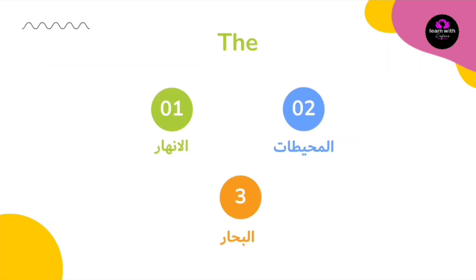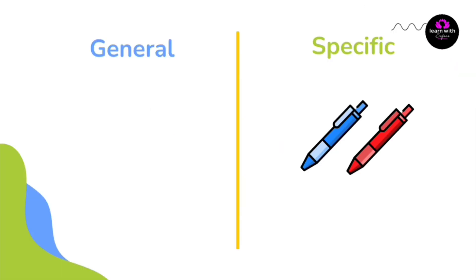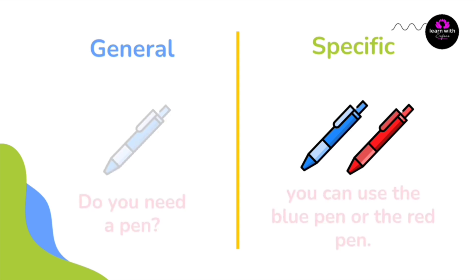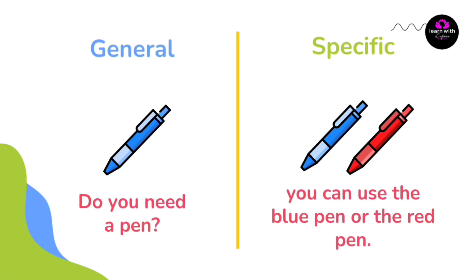برضو معلومة مهمة عن the: تيجي دائما مع اسماء الانهار والمحيطات والبحار. واذا جينا نقارن بين الـ general والـ specific: Do you need a pen? — هنا السؤال عام، ما حددنا نوع القلم ولا لونه. في الاسماء: You can use the blue pen or the red pen — هنا حددنا.